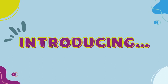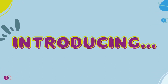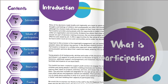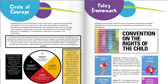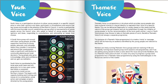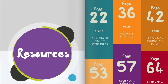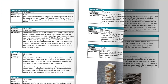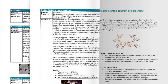EA Youth Services participation team have developed a participation toolkit which will support youth workers to involve young people in decision making. Grounded in Lundy's model of participation, the toolkit contains over 80 activities and 20 printable resources to give young people a space, a voice, an audience and influence to contribute to decisions affecting them.